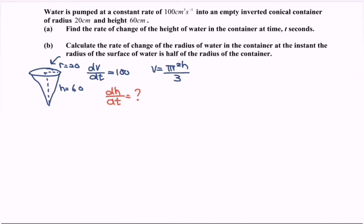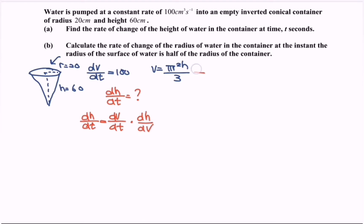State the chain rule: dh/dt = (dV/dt) × (dh/dV). So we have to focus on expressing the situation V in terms of h.